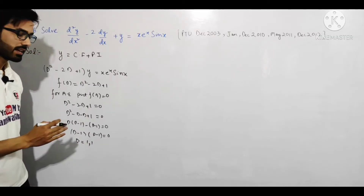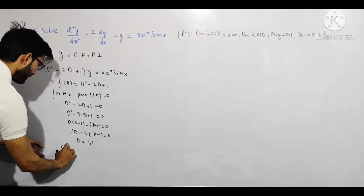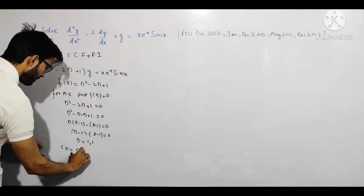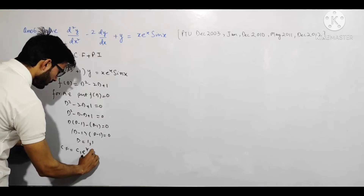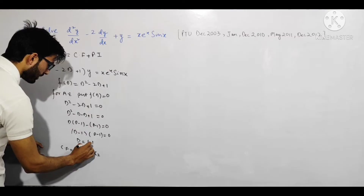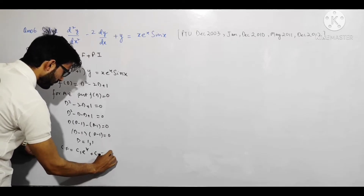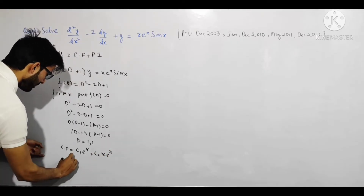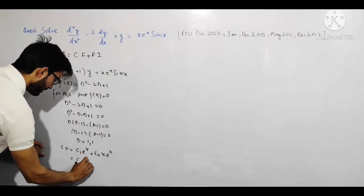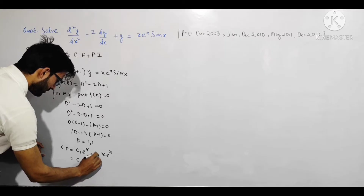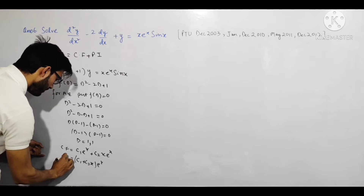Jab roots same/repeated hote hain, complementary function kaisa hota hai: CF = (c₁ + c₂x)eˣ. Pehli term c₁eˣ hoti hai, aur kyunki root repeated hai, doosri term mein c₂ ke saath x bhi likha jata hai, so CF = (c₁ + c₂x)eˣ. Yeh hamara complementary function aa gaya.